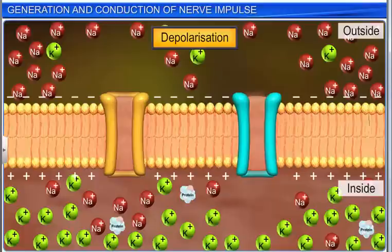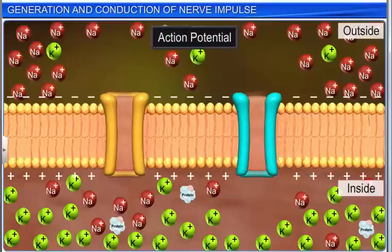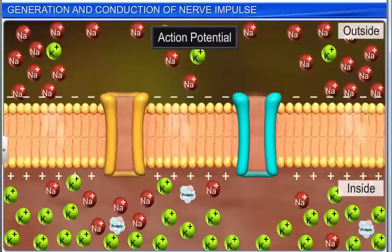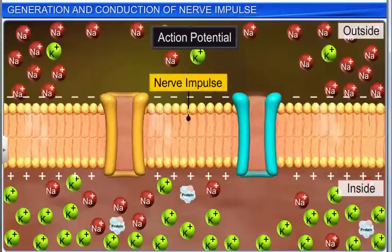The electrical potential difference across the plasma membrane at site A is called the action potential. This action potential travels as a wave of depolarization along the length of the nerve fiber in a particular direction, and is called the nerve impulse.